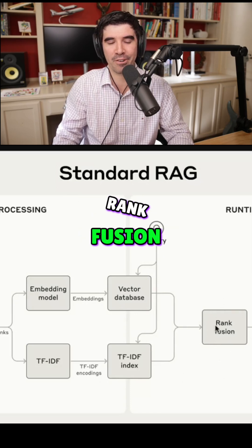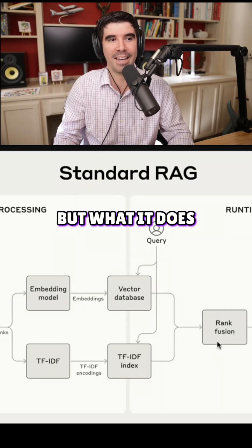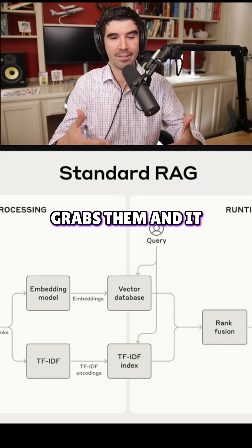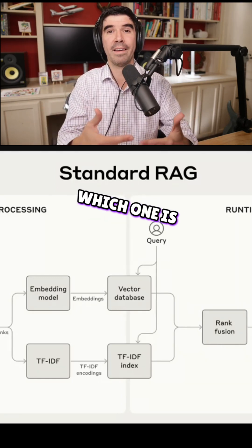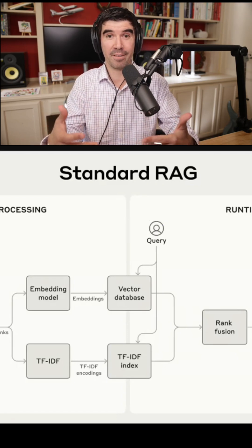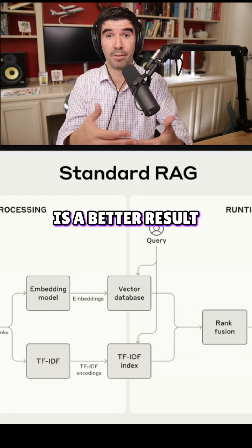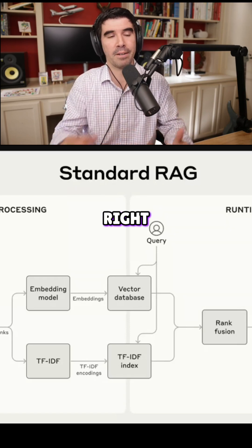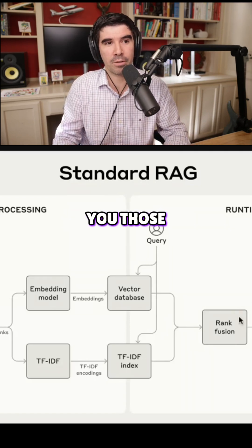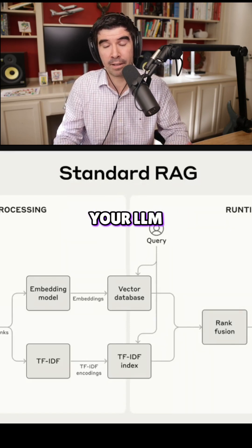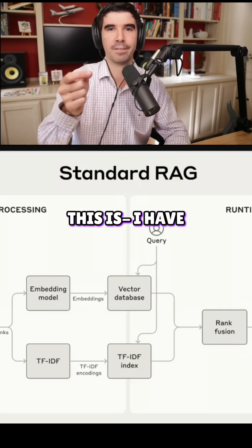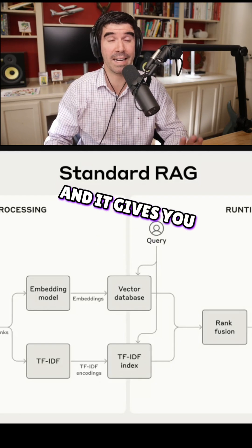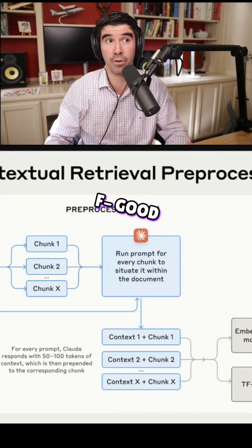It does reciprocal rank fusion — and that's a mouthful. But what it does is it basically grabs them and tells you which one is a better result for relevance, for what you asked. And so it gives you those, and then the AI — your LLM — can then say, 'I have what I need, I'll give you an answer.' So that is very good and it gives you very good results.